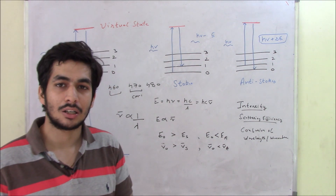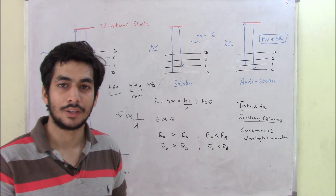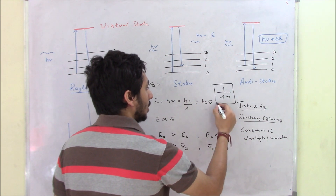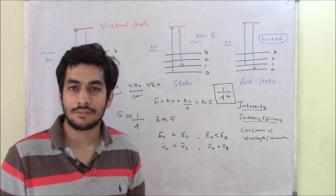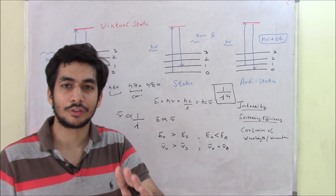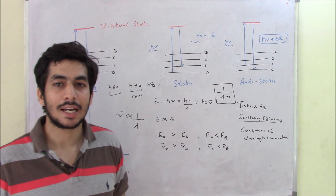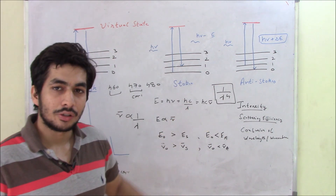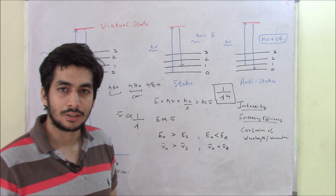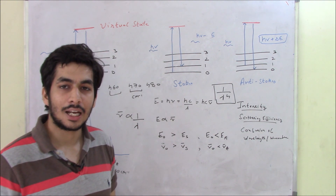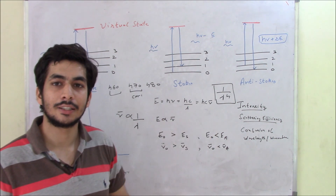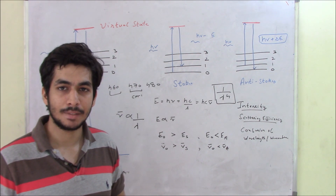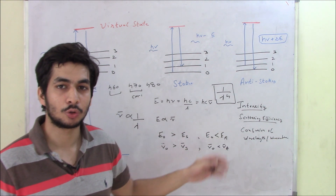Now let's discuss scattering efficiency. Scattering efficiency describes how efficiently a particle can scatter a particular wavelength, and it is given by 1/λ⁴. This means lower the wavelength, better the scattering efficiency. Comparing UV, visible, and IR: UV has the lowest wavelength and therefore the best scattering efficiency. Most Raman spectrometers try to use UV region to get better scattering efficiency and better Raman spectra.